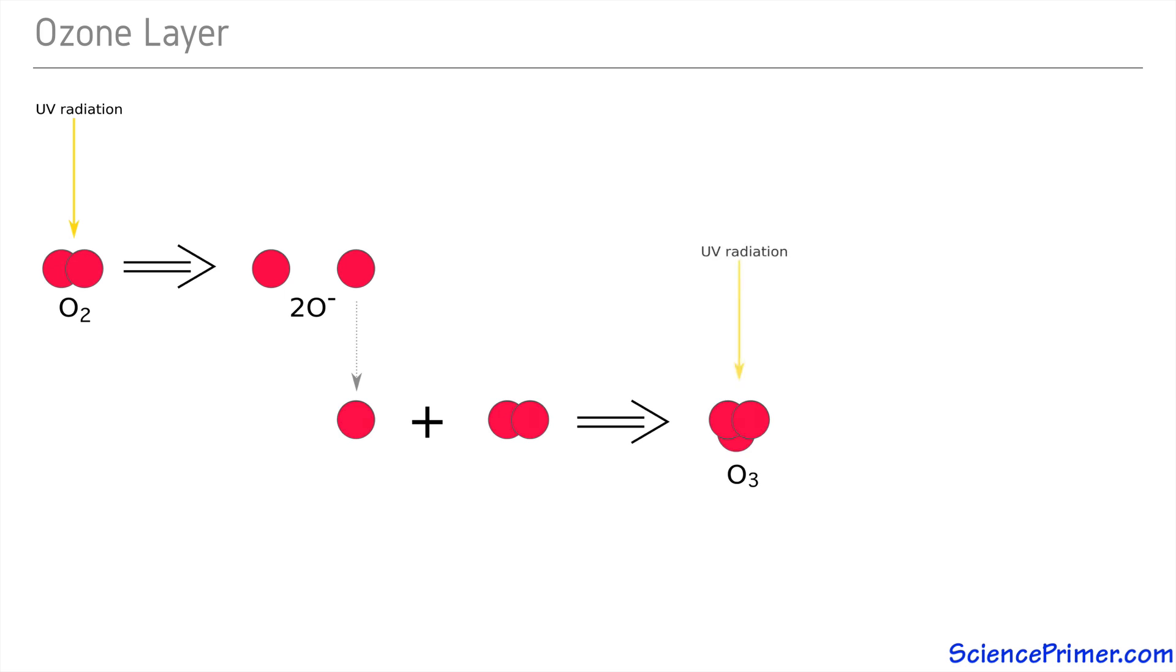These ozone molecules are also able to absorb shortwave UV radiation. When an ozone molecule absorbs UV radiation, it breaks down into a molecule of diatomic oxygen and one free oxygen atom.